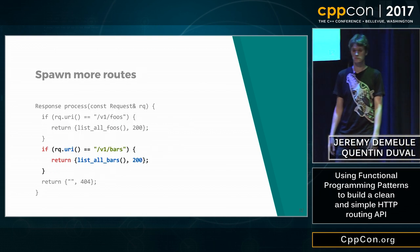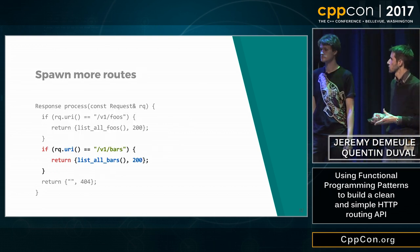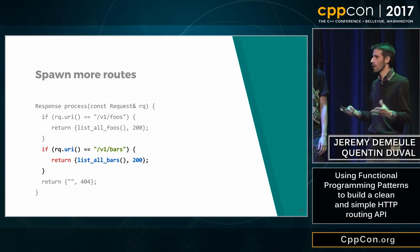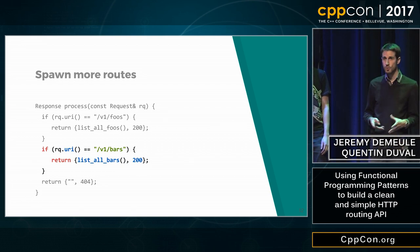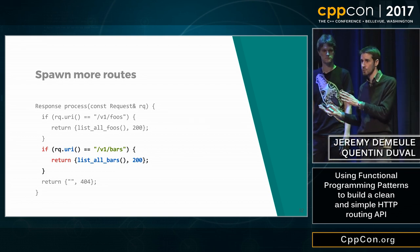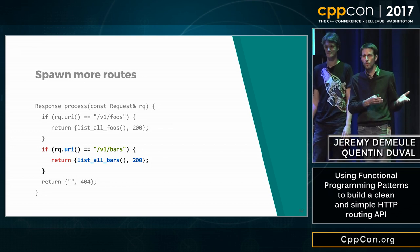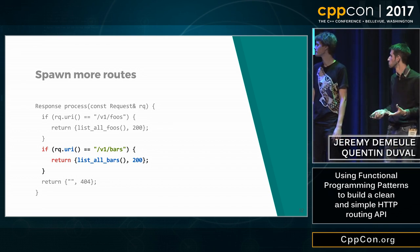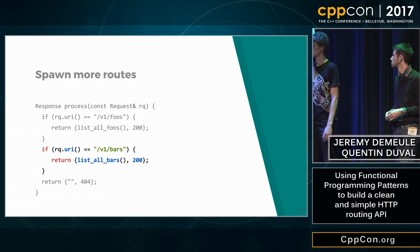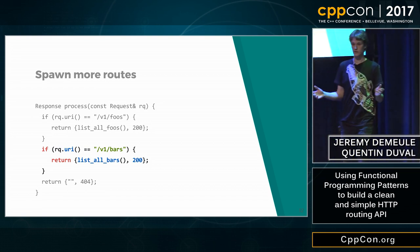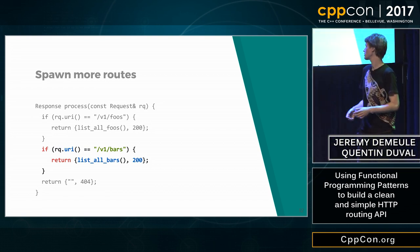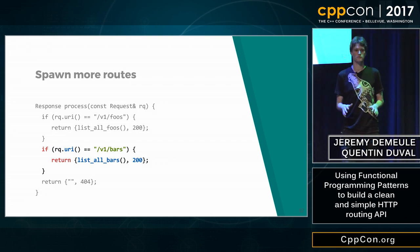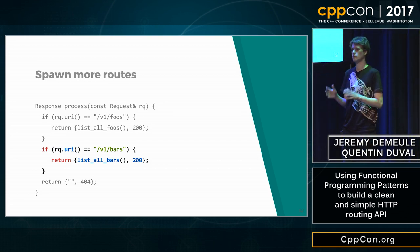For a second URI, you can just add a new if, or you can use a more advanced C++ feature like a map from string — the URI — to a function, the function you want to call. Copy-paste is always the answer, apparently. It works.